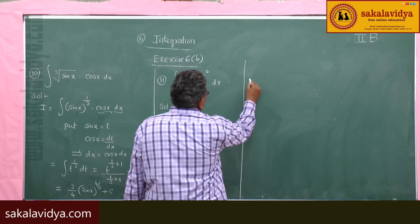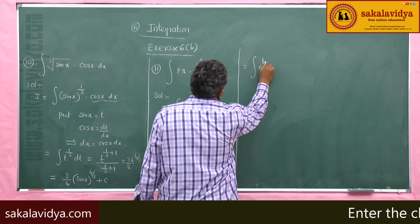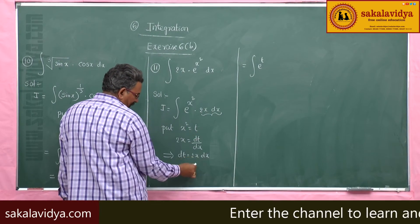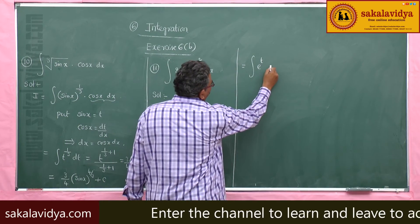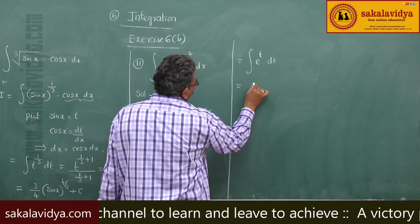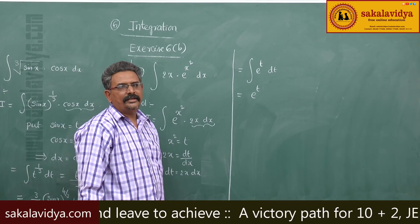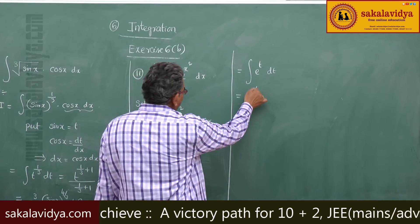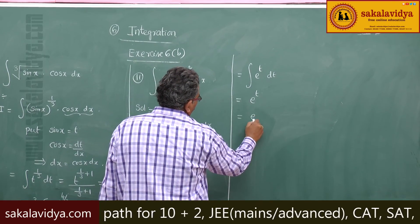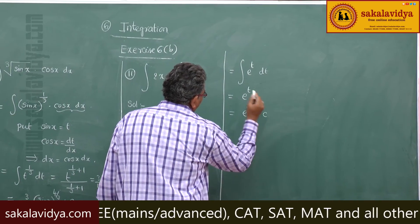Now, I can be written as integral of e to the power t, where 2x dx is nothing but dt. This is a standard result. So, integral of e to the power t dt is e to the power t. Since t is nothing but x square, the answer is e to the power x square plus constant of integration.